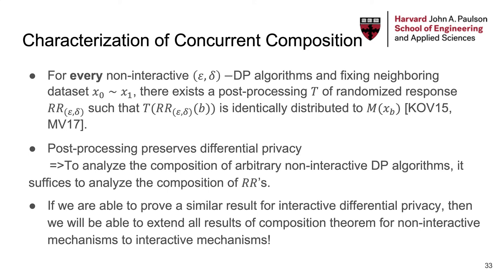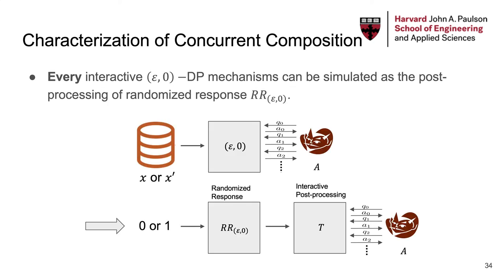Since differential privacy is preserved under post-processing, it follows that to analyze the composition of arbitrary non-interactive DP algorithms, it suffices to analyze the composition of randomized response. If we are able to prove a similar result for interactive differential privacy, then we'll be able to extend all of the composition theorems for non-interactive mechanisms to interactive mechanisms. So in this work, we find that every interactive epsilon-delta DP mechanism can be simulated as the post-processing of randomized response, where the post-processing function itself is interactive.